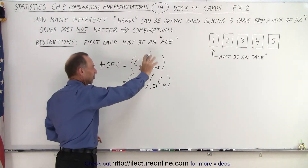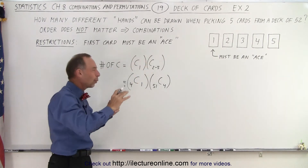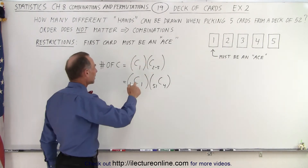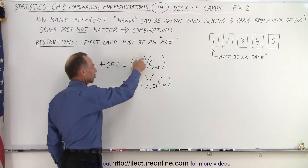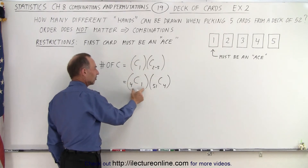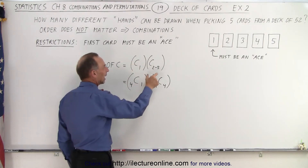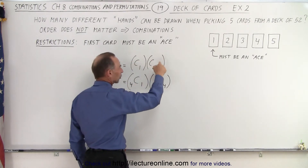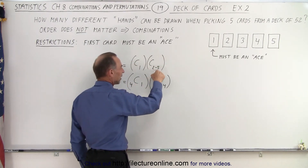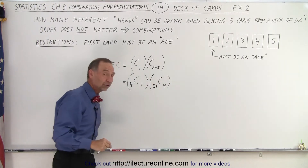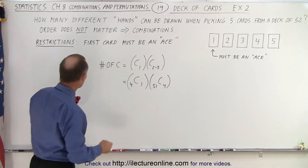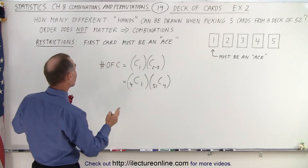Don't get confused with this — it's just a way to simply write that for the first card, we have a certain number of combinations. And for the next four cards, from two to five, we're going to figure out how many combinations using the general equation.